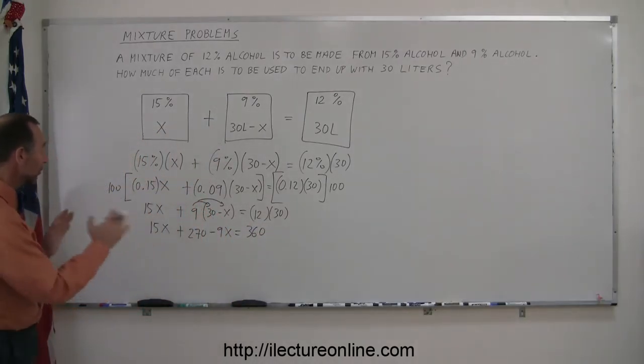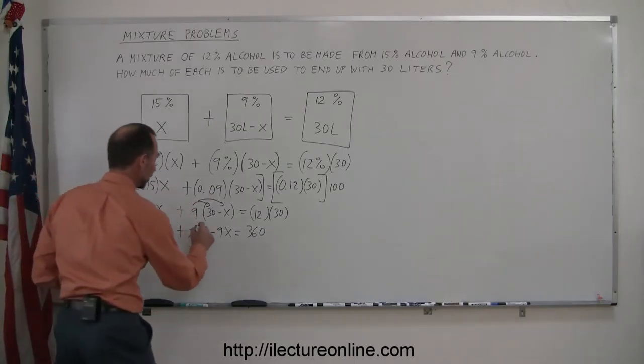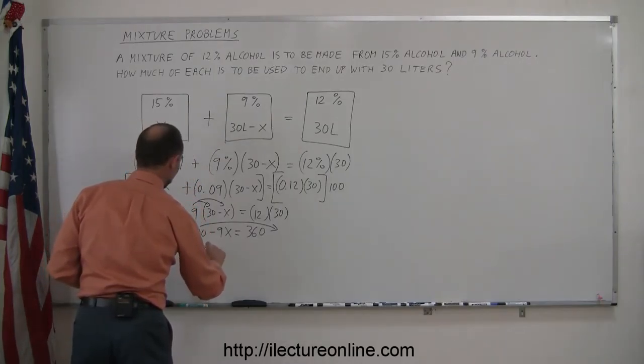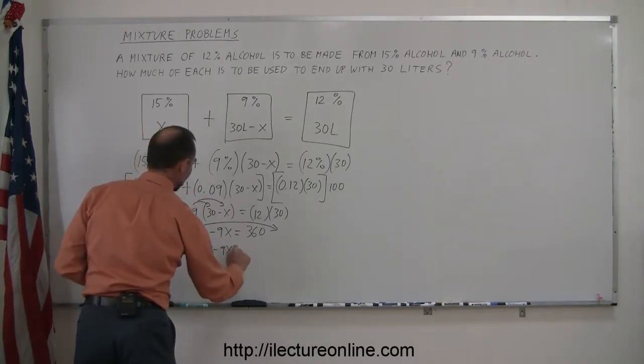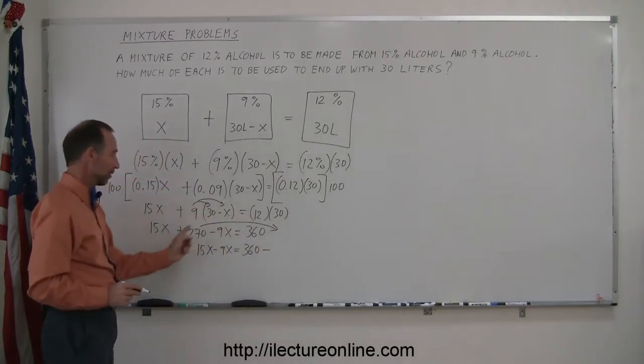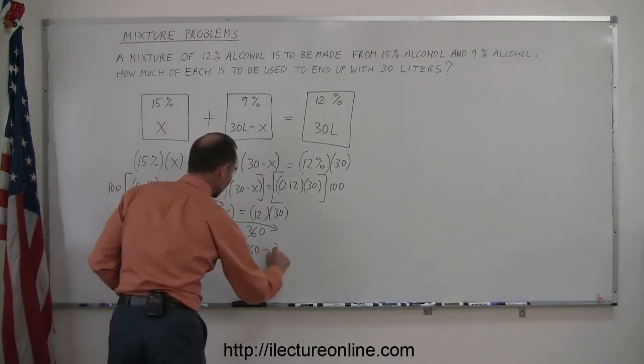Now we go ahead and move all the x's to one side. They're already on the left side and move all the numbers to the other side. So let's take the 270 and move it over here. So we have 15x minus 9x equals 360 minus, remember when you cross the equal sign the sign changes, this is minus 270.